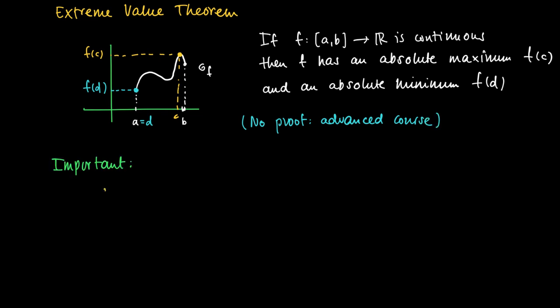It's important to realize that there are some sufficient conditions mentioned in the theorem. And the first one is that f is defined on a closed interval [a,b]. So we can make a counter-example to the statement in Extreme Value Theorem if we have an open interval.